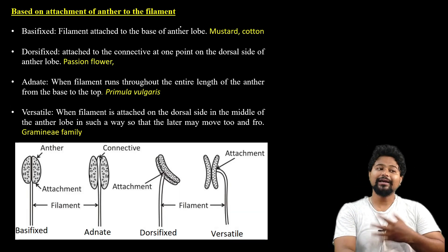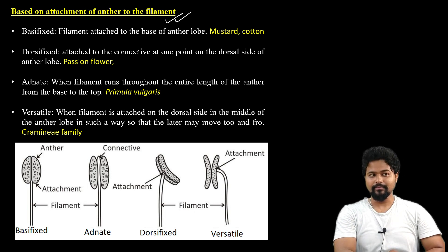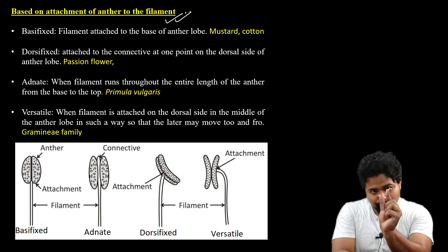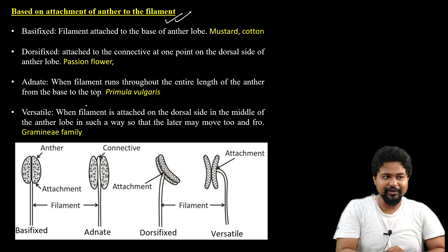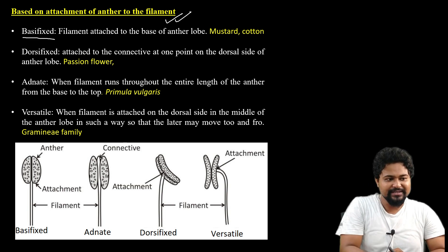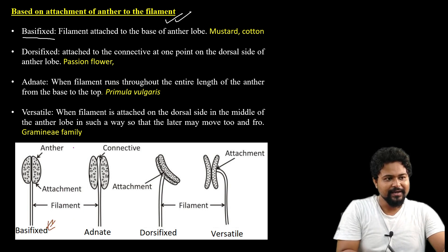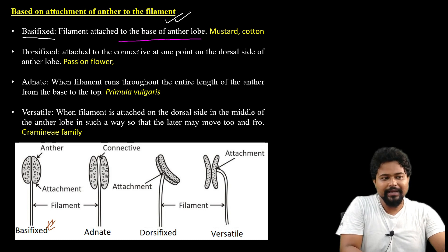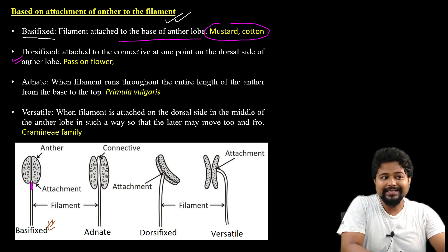Next is the classification based on the attachment of anthers to the filament. The first type is basifixed. Basifixed means the filament is attached to the base of the anther lobe. The filament is attached to the connective at one point on the dorsal side of the anther lobe.